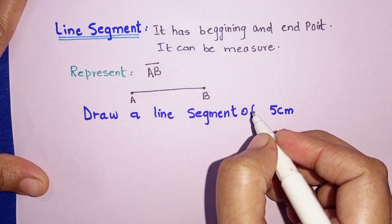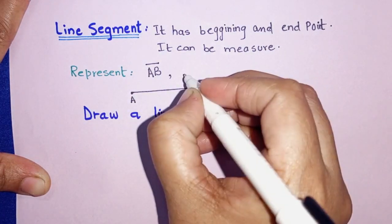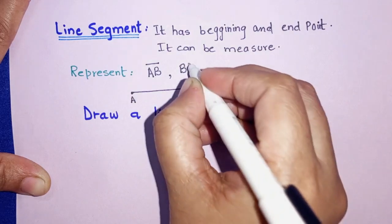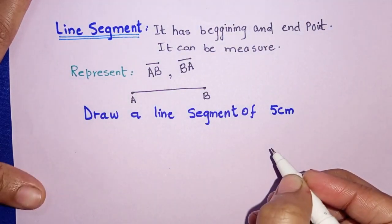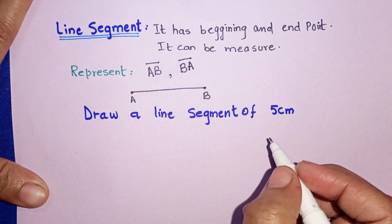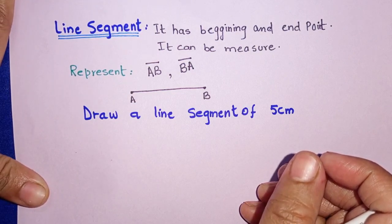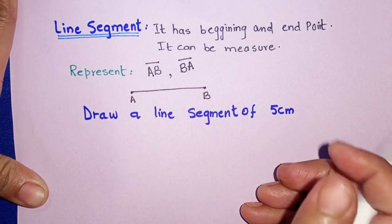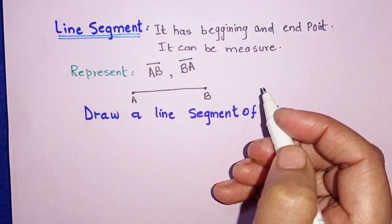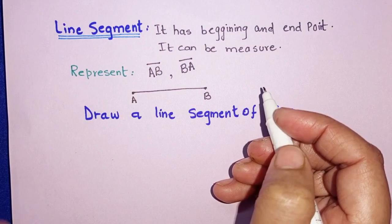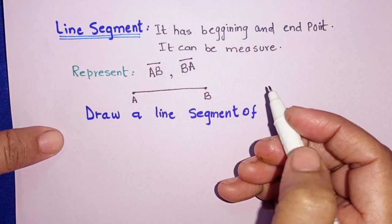A line segment is called 'qat-e-khat' in Urdu. We can represent it as AB or BA. Line segments are drawn according to measurement — they can be measured. The key difference is that a line segment can be measured, but a line cannot be measured.